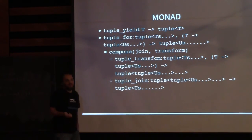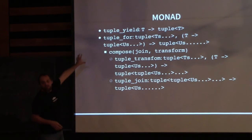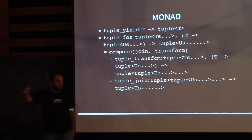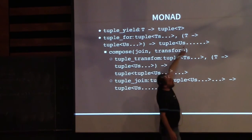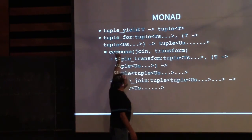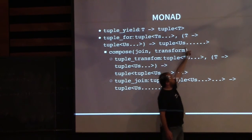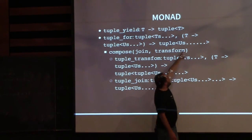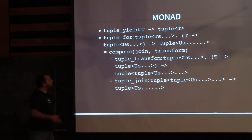Now, since this is a functional talk, let's talk about a monad — a polymorphic monad. We define two functions: tuple_yield and tuple_for. tuple_yield takes a type T and puts it into a tuple. tuple_for takes a tuple of T's and a function mapping T to a tuple of U's, with the result being a tuple of U's. The uses parameter pack notation that isn't valid C++ syntax, so it's easier to think of it as tuple_transform composed with tuple_join.